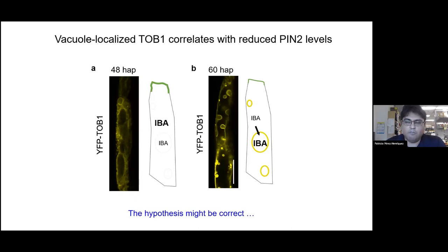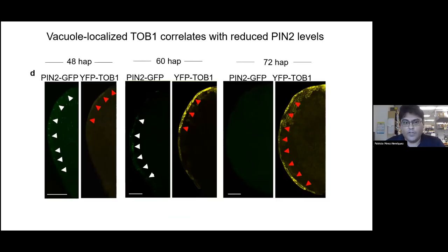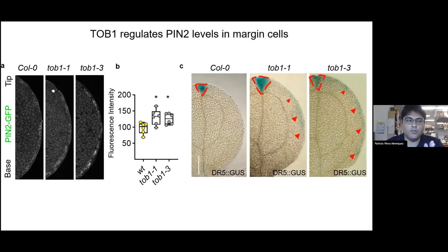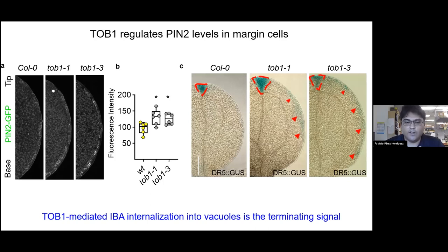To corroborate this hypothesis, we analyzed the spatial-temporal dynamics of TOP1 and PIN2. We discovered that as PIN2 is being removed from the margins of the cotyledon — if you follow the white arrowheads — TOP1 expression starts appearing from tip to base of the cotyledon in a complementary fashion. If TOP1 functions to decrease PIN2, then it makes sense that loss of function of two alleles of top1 produces an increase in PIN2 levels and, with that, an increase in auxin accumulated at the tip of those cotyledons.